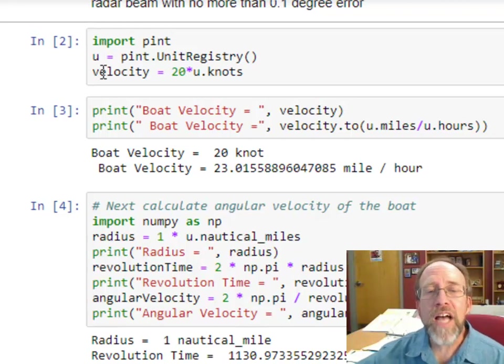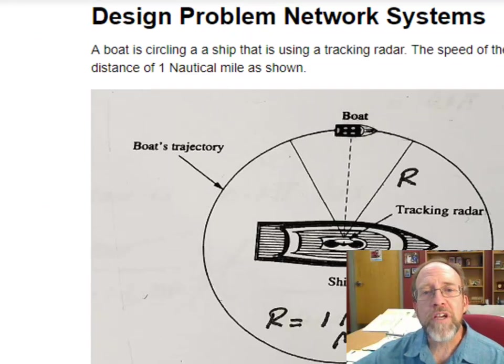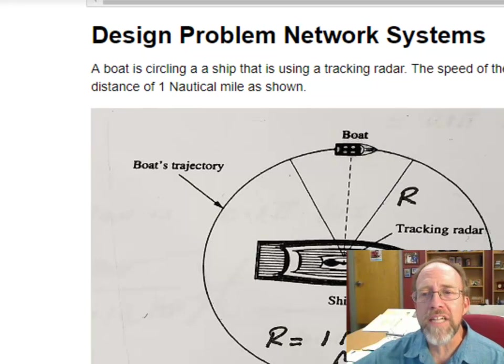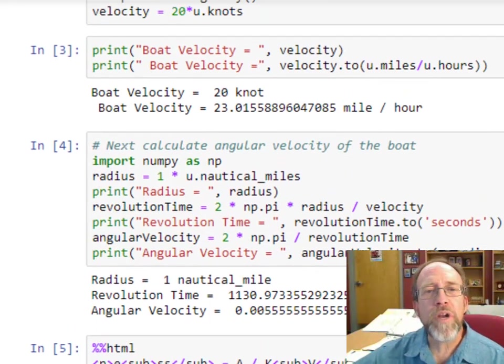I import Pint and I set up a unit registry, which I'm going to call U. The unit registry of Pint. My velocity that I'm starting with is 20 knots. Notice I've got a value and I've got a unit. 20 times unit knots is how you actually set up velocity with units, because if you look at the problem, the speed of the boat is 20 knots.